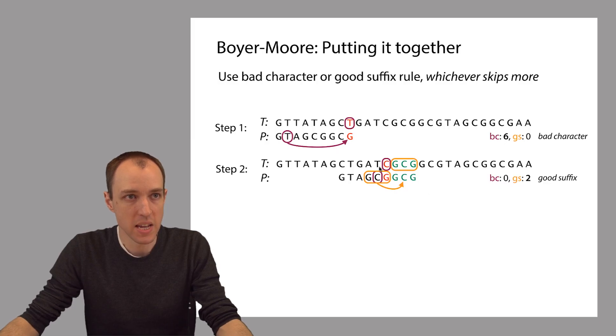And so if we use our bad character rule, it's going to tell us that we can't skip any alignments. Because as soon as we shift P over by one, this C down here that's highlighted in purple comes underneath this C right here. So the bad character rule doesn't skip any alignments.